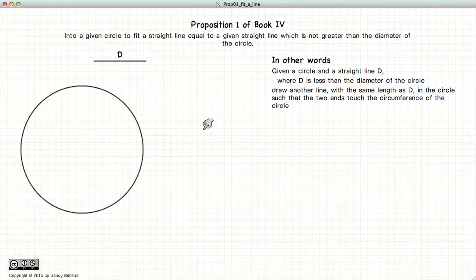This tutorial is going to be on Proposition 1 of Book 4, which gives us the instructions on how to copy a given line D into a circle such that the endpoints of D touch the circumference of the circle.